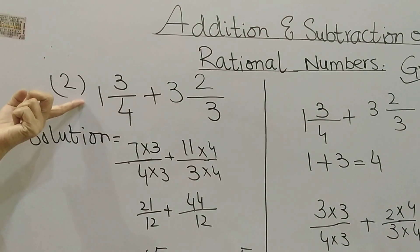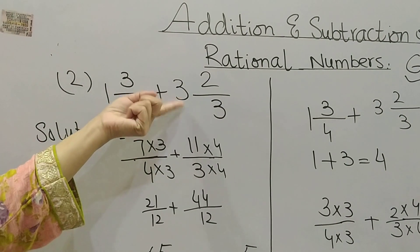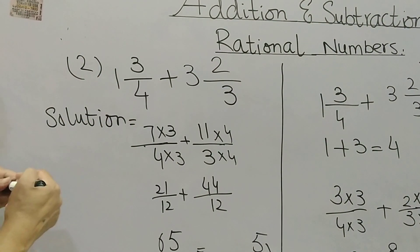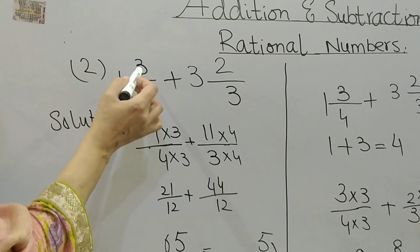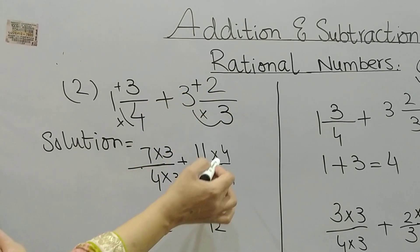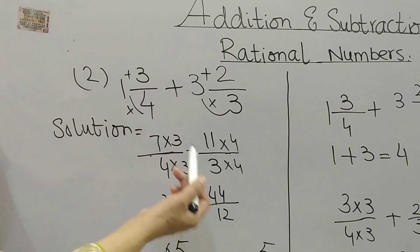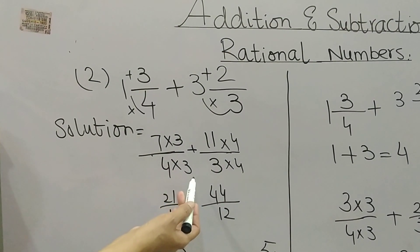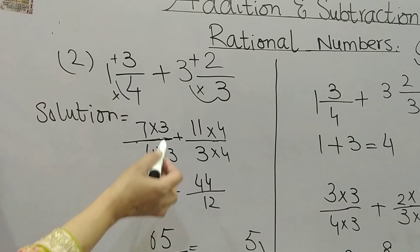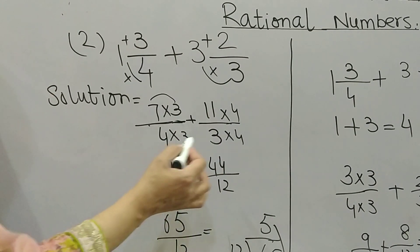Let me do one more question. Here you can see a question with mixed number fractions: 1 whole 3 by 4 plus 3 whole 2 by 3. First, we will convert the mixed numbers into improper fractions. For 1 whole 3 by 4: 1 times 4 is 4, plus 3 gives 7 by 4. For 3 whole 2 by 3: 3 times 3 is 9, plus 2 gives 11 by 3. Now I make their denominators the same by multiplying 4 by 3 and 3 by 4.